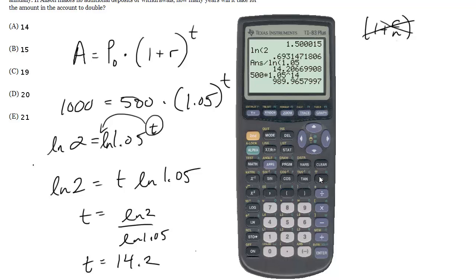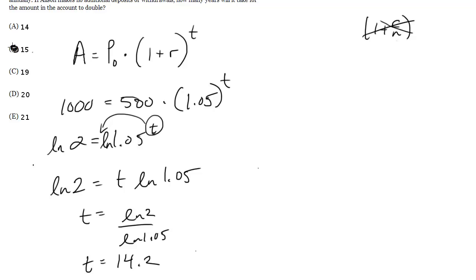So we actually have to pick the year higher than 14.2 because after 15 years, we'll be certainly much more than doubled.